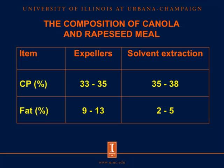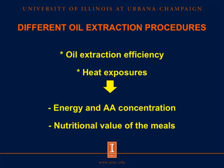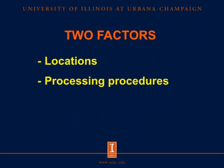For chemical composition, the meal from expeller procedures contains crude protein ranging from 33 to 35% and fat ranging from 9 to 13%. Different oil extraction procedures result in different chemical compositions because differences in oil extraction efficiency and heat exposure between expeller and solvent extraction procedures could affect energy and amino acid concentration and consequently affect nutritional values of the meal. Two key factors affecting nutritional values are the location where canola and rapeseed are grown and the processing procedures used to remove oil.